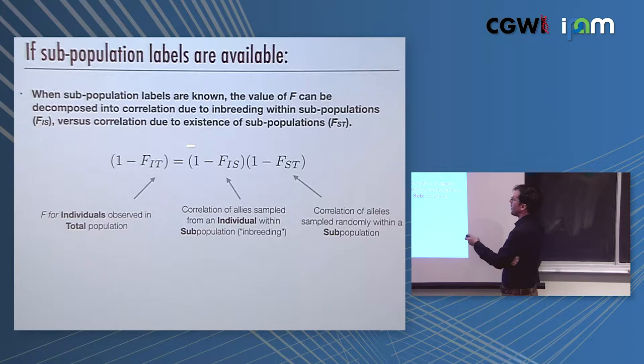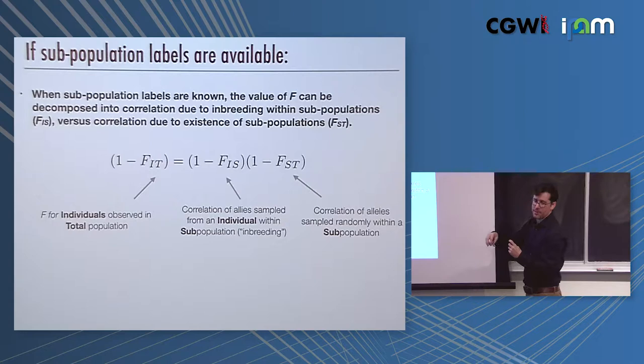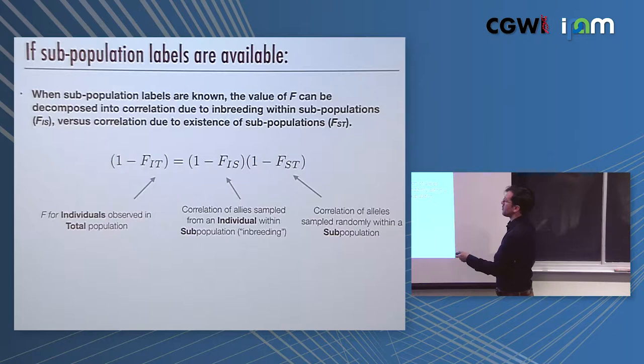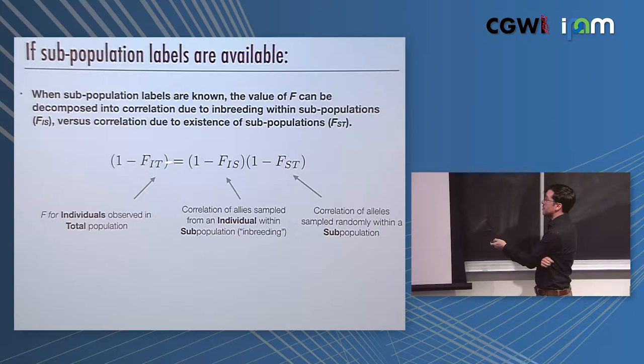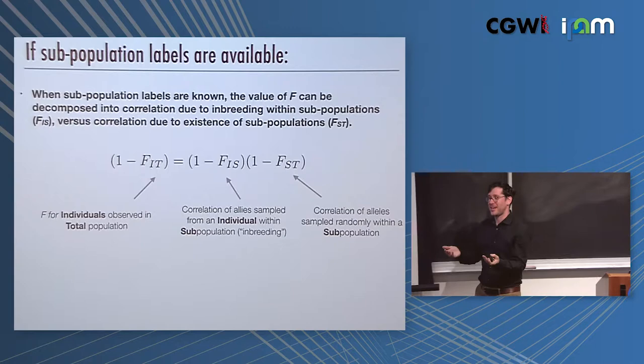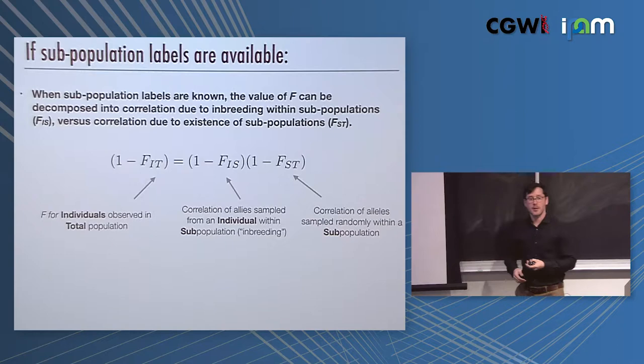If you have subpopulation labels so you know where everyone's from, then you can break it into the correlation of alleles sampled from an individual within a subpopulation, and this would be things such as inbreeding. Then you have the correlation of alleles sampled randomly within a subpopulation. That's FST. Then F is for individuals observed in the total population. You have individuals relative to the total, individuals relative to the subpopulation, subpopulation relative to the total. In practice in humans, the effects of inbreeding are generally pretty low. If you just measure F in your sample, you're usually getting kind of at FST.